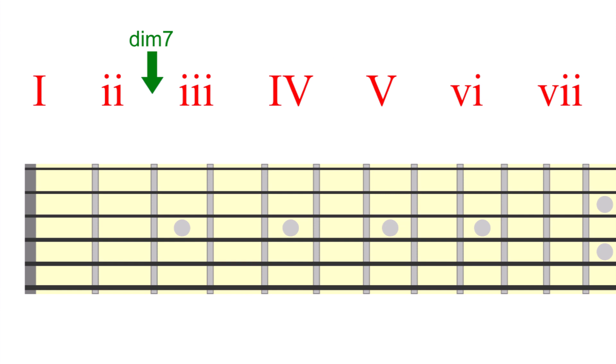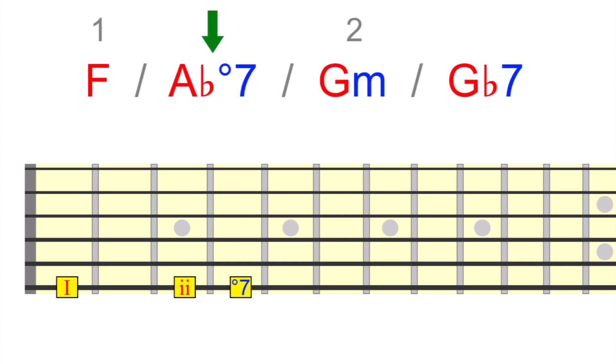Another common example of this you'll hear, particularly in jazz styles such as bossanova, is the diminished 7th between the 2 and 3. Here, we're in the key of F major, with G minor as the 2 chord.